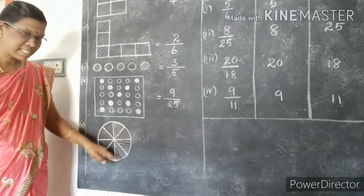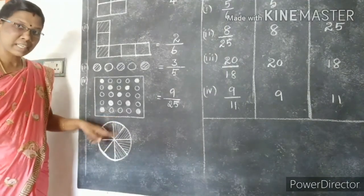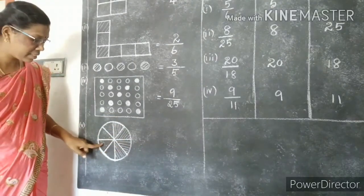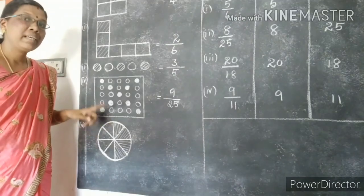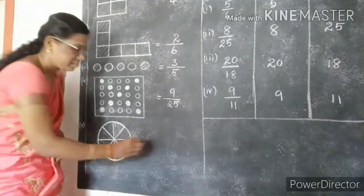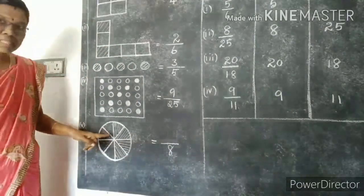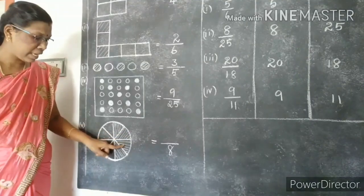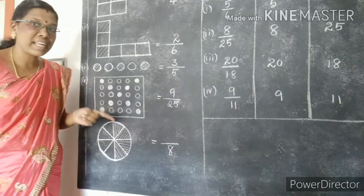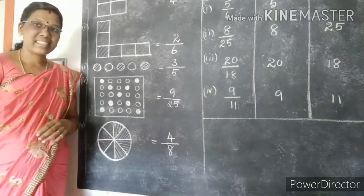See the last one. One circle is given. Count how many parts the circle is divided into: one, two, three, four, five, six, seven, eight — totally eight parts. Write eight as denominator. Now count the shaded portions: one, two, three, four — total four shaded portions. Write four as numerator. So the fraction is four by eight. Thank you.